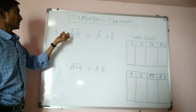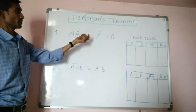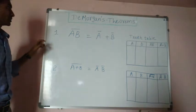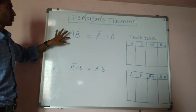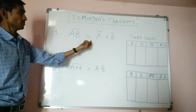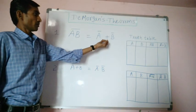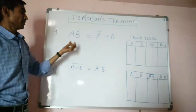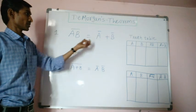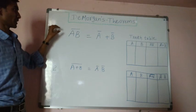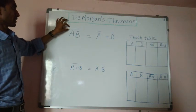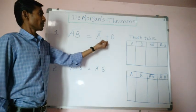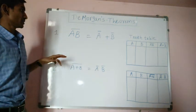The statement is: A, B complement is equal to complement of addition. I will explain it. The complement of the product of two variables is equal to the sum of the complement of two variables. This is the first theorem.